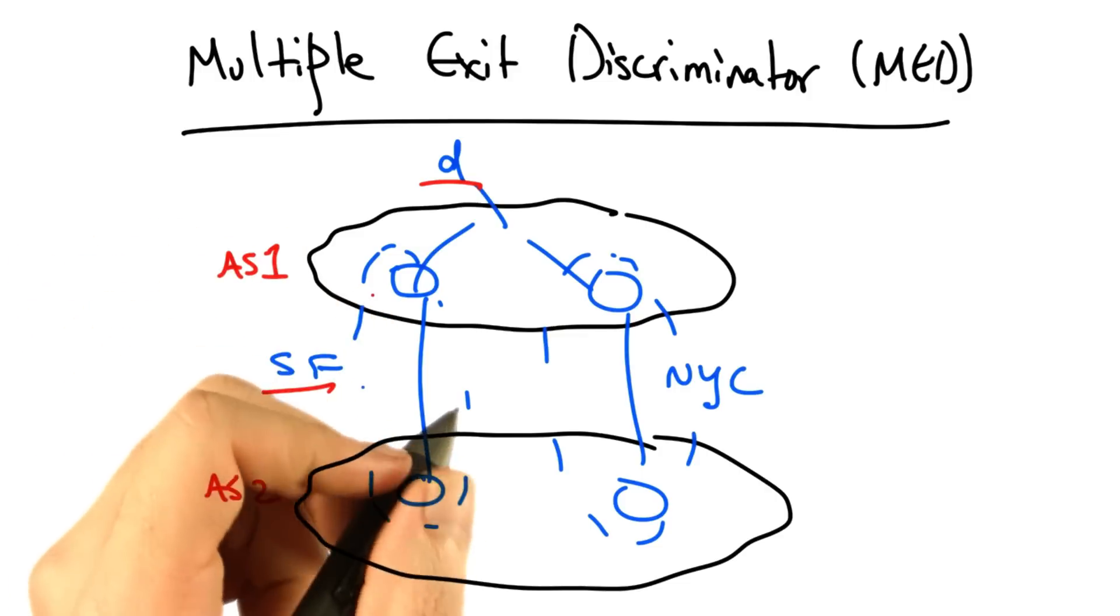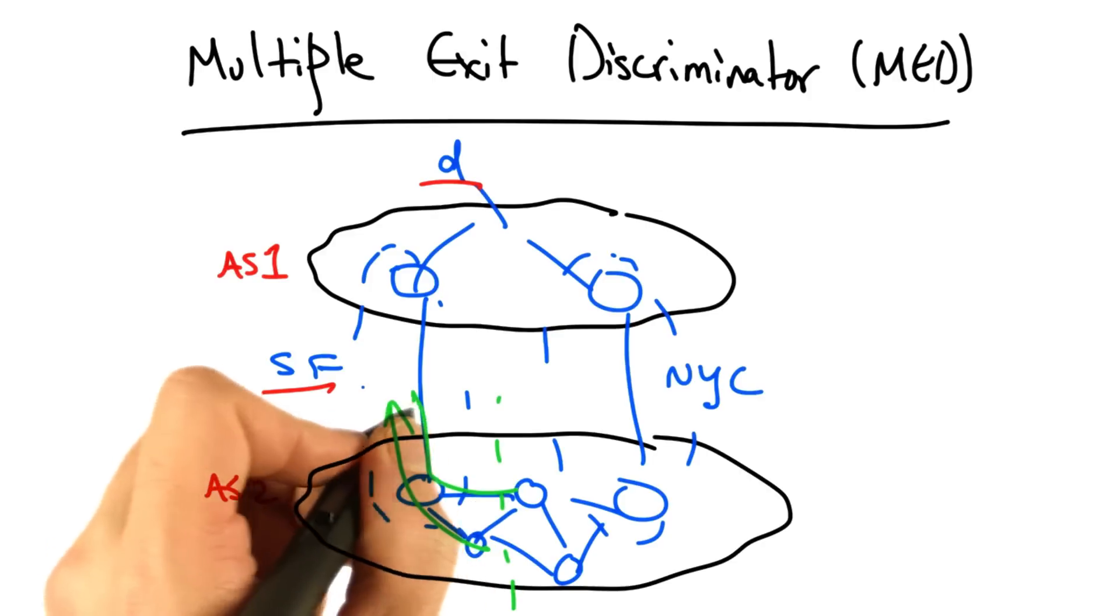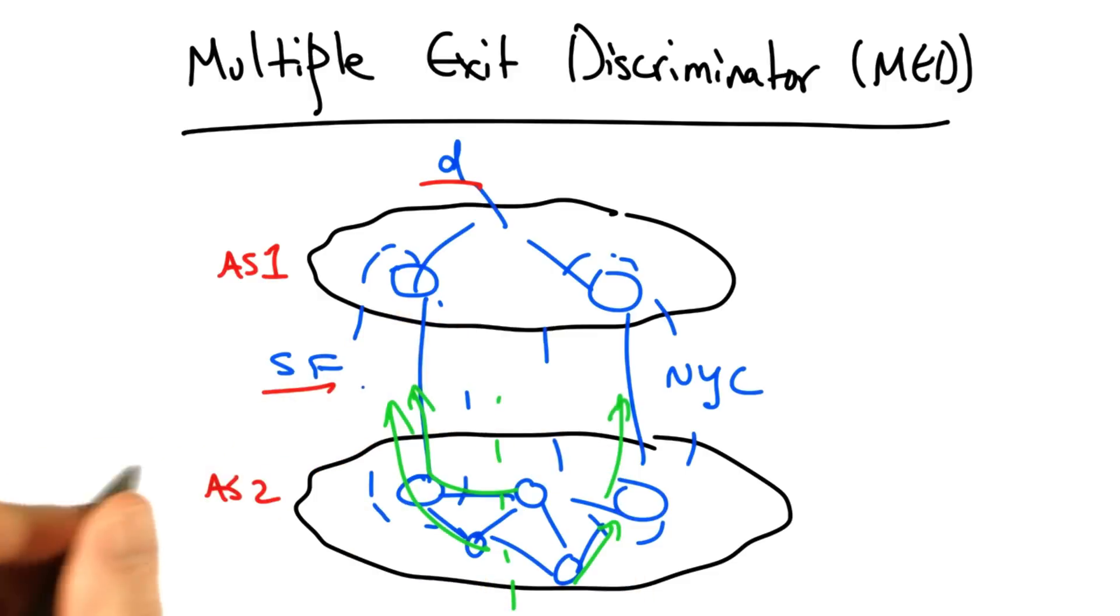Remember that all things being equal, routers inside AS2 will select the BGP route with the shortest IGP path cost to the next hop, resulting in hot potato routing. Some routers would select the San Francisco egress, and other routers might select the New York egress.